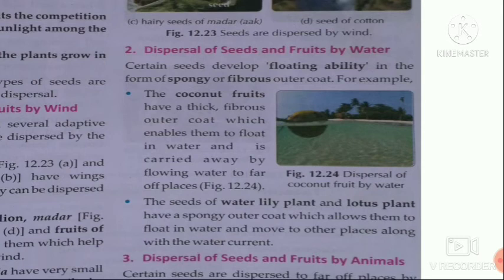Dispersal of seeds and fruits by water: certain seeds and fruits have a spongy or fibrous outer coat. For example, the coconut fruit has a thick fibrous outer coat which enables it to float in water and be carried away to far-off places. The seeds of water lily and lotus plants have a spongy outer coat which allows them to float in water and move to other places along with the water current.